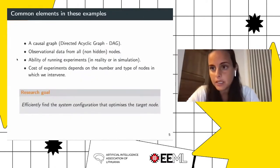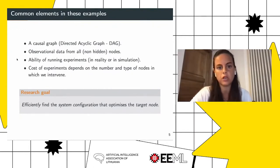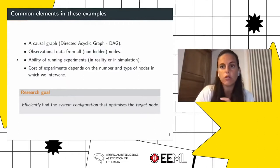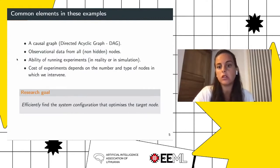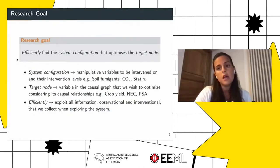So we can identify some common elements in these examples. We have a system described by a causal graph — generally a directed acyclic graph or DAG. We can collect observational data from nodes that are not hidden. We can run experiments either in reality or through a simulator, and each experiment has a cost that depends on the number of variables we intervene on and the type of nodes. The research goal is how we can efficiently extract all possible information, especially because experiments are generally very difficult to implement.